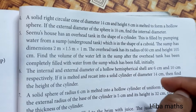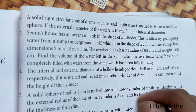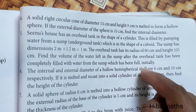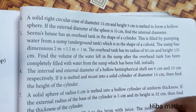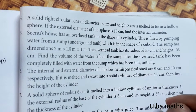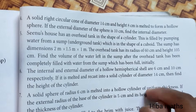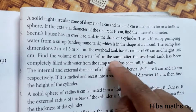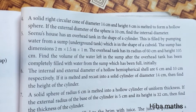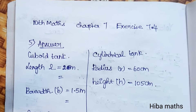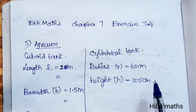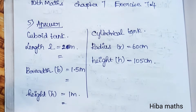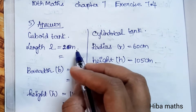Note that the sump is initially full. The overhead tank takes its volume of water from the sump, and the balance remains in the sump. So we have a cuboid tank and a cylindrical tank. The cuboid tank length is 2 meters.